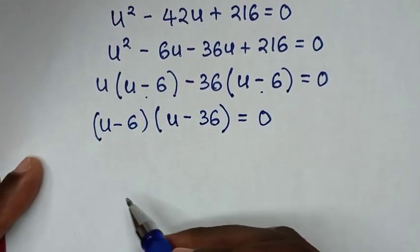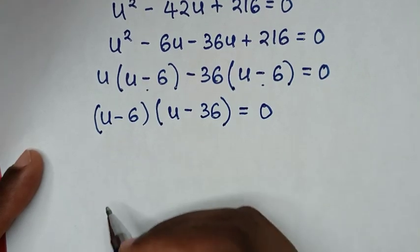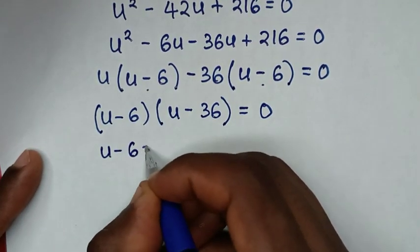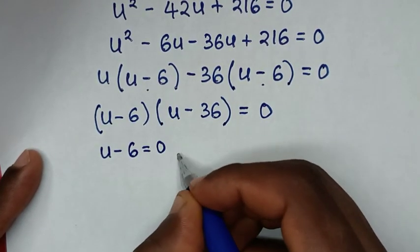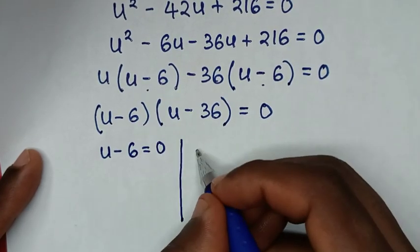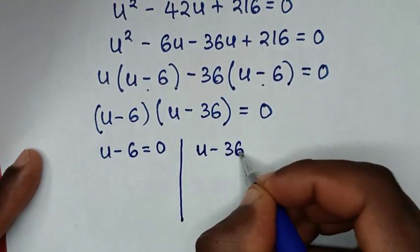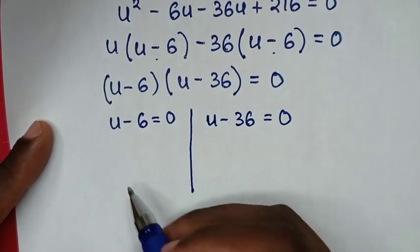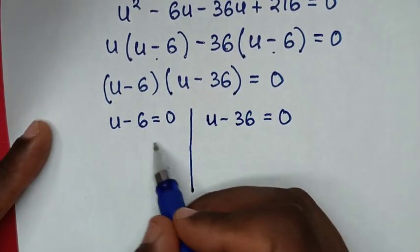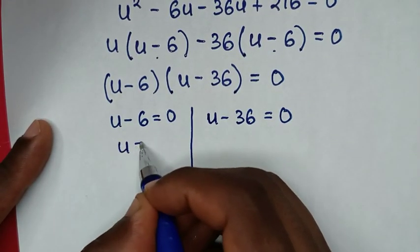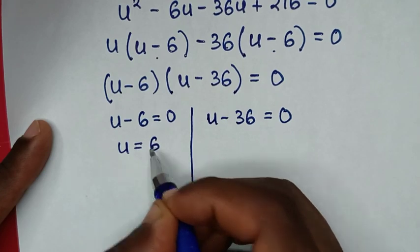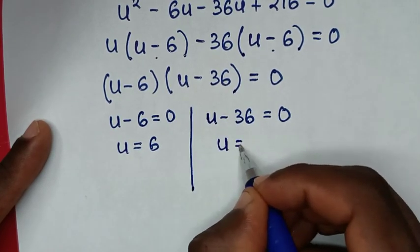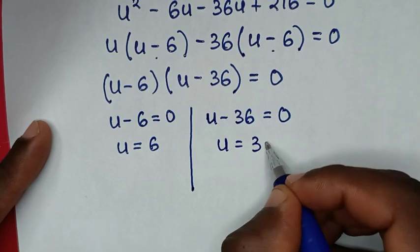From here we have two solutions. The first solution is u minus 6 is equal to 0, giving u is equal to 6. The second solution is u minus 36 is equal to 0, giving u is equal to 36.